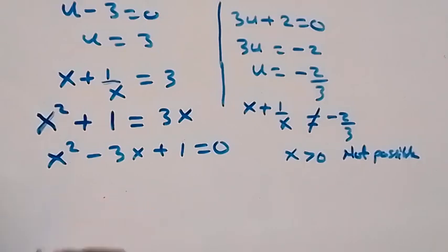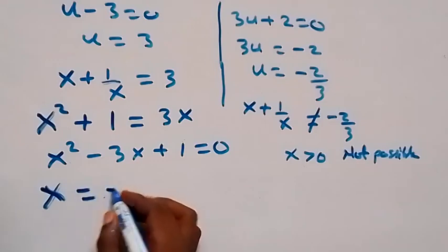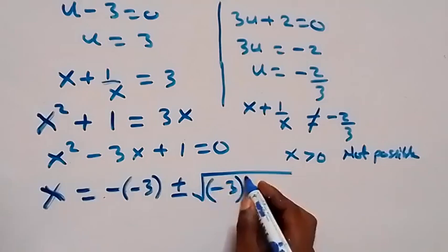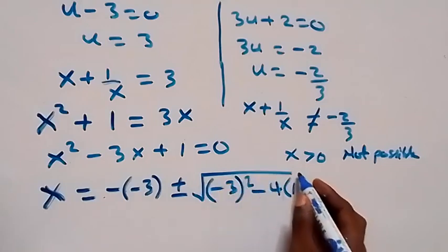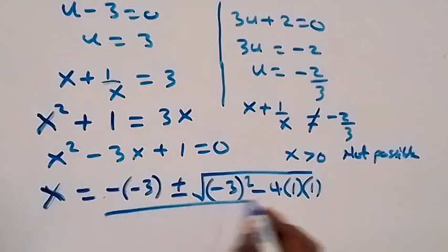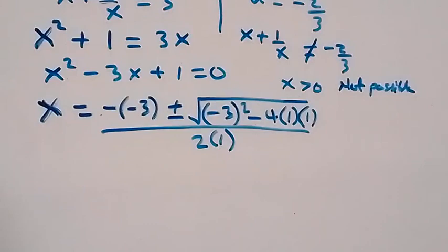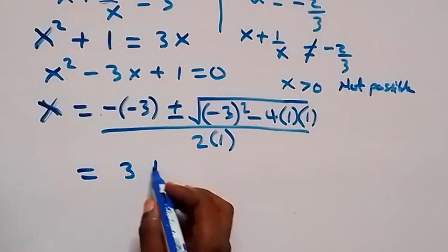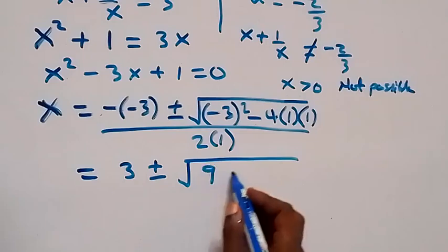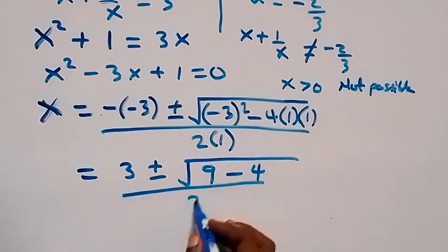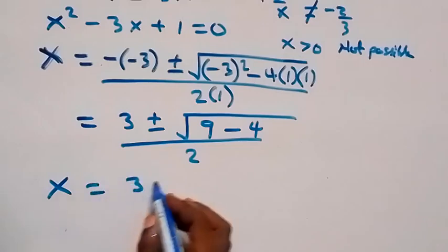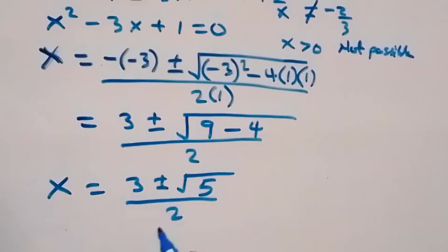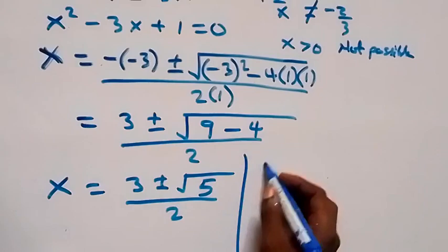Using the quadratic formula, x equals negative b, that is minus negative 3, plus or minus the square root of b squared minus 4ac, over 2a. Here a equals 1, b equals negative 3, c equals 1. So x equals 3 plus or minus square root of 9 minus 4, all over 2, which gives x equals 3 plus or minus square root of 5, over 2.